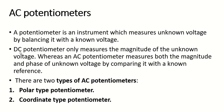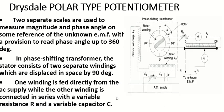In a DC potentiometer, we are measuring only the magnitude of the unknown voltage. We know that for DC there is only magnitude, no phase displacement. But in an AC potentiometer, we can measure both magnitude and phase displacement of the unknown voltage by comparing it with a known voltage. There are two types of AC potentiometer: polar type and coordinate type.